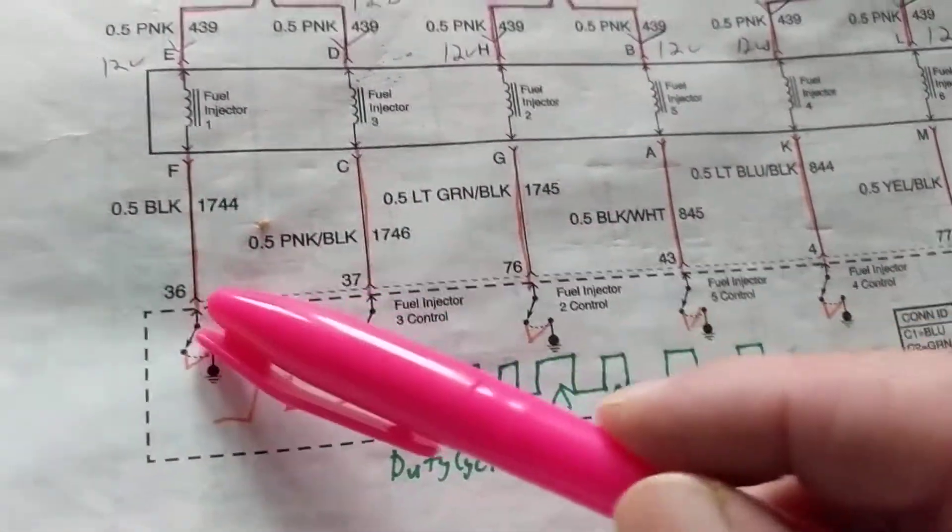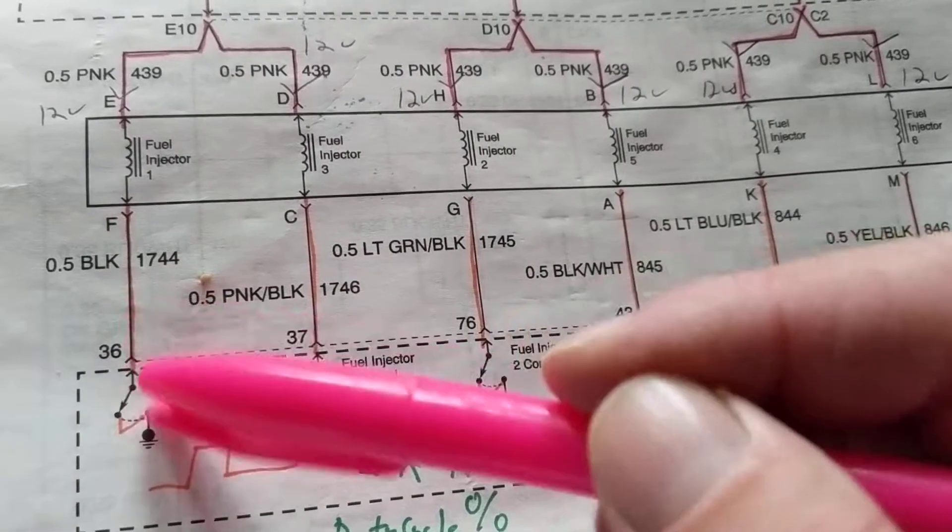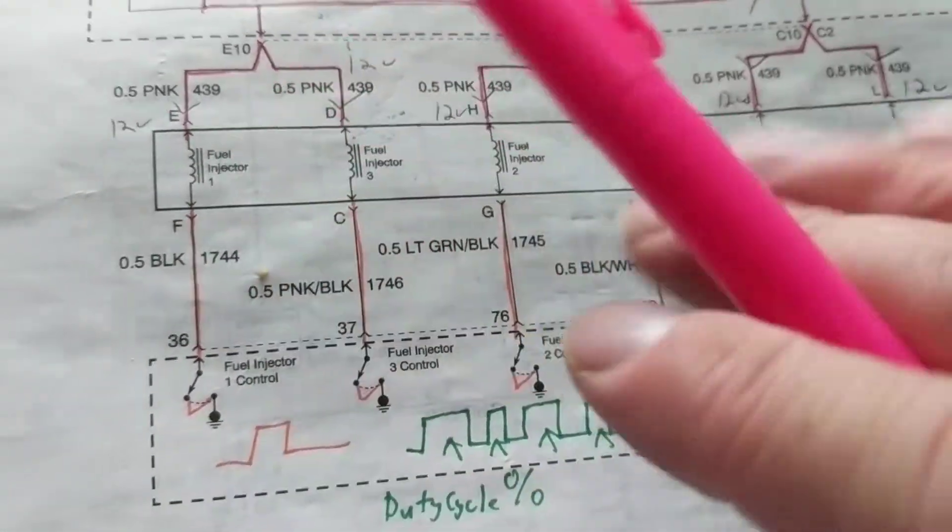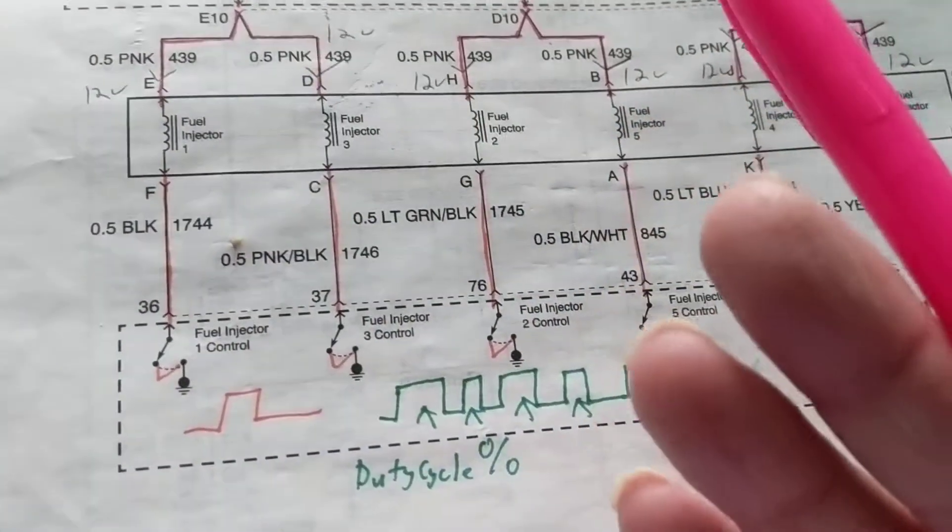He's going to ground this. You see this is ground, ground. He's going to toggle this ground on and off, on and off, on and off. That, in turn, will make the fuel injector go on and off either longer or shorter time.